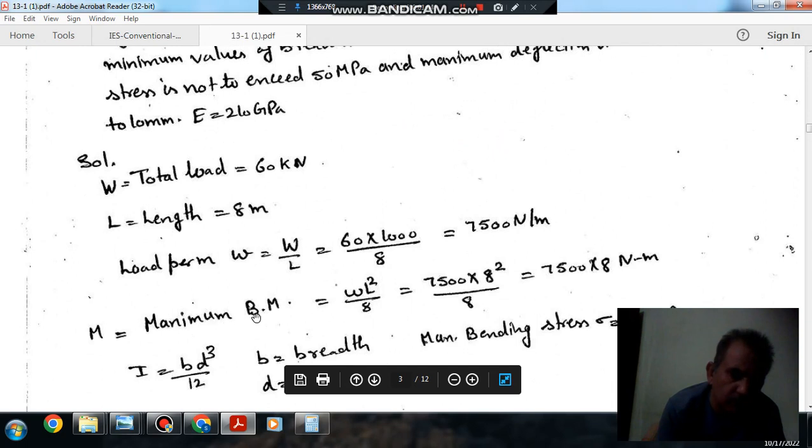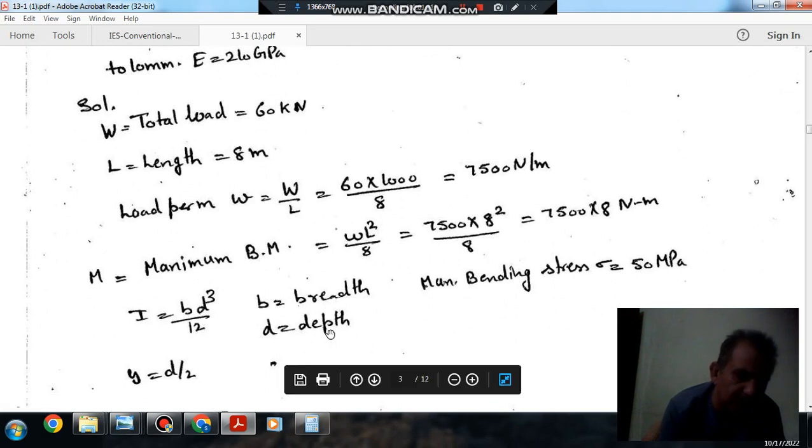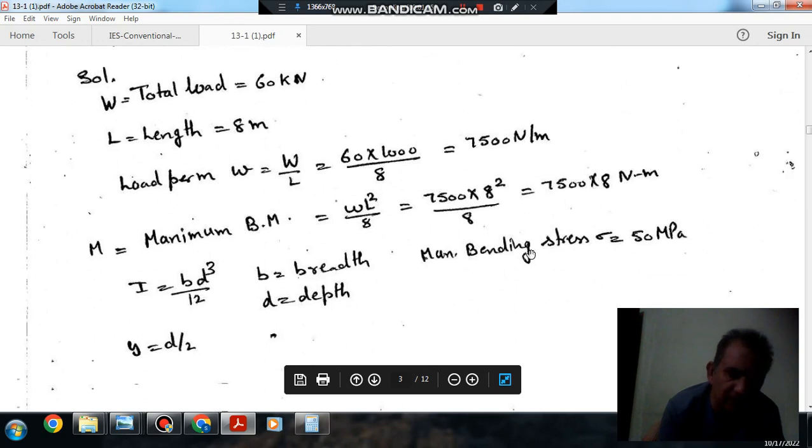So maximum bending moment in case of UDL is WL square by 8, that comes as 7500 times 8 squared equals 75000 times 8 equals 7500 times 8 times 1000 Nm. And as the section is rectangular, B is breadth and D is depth. So I will be BD cubed by 12, and maximum bending stress is given as 50 MPa.